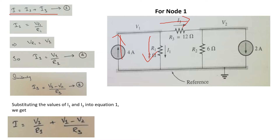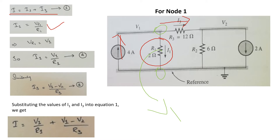Now, what is the value of I1 and I3? From the figure, you will see that the value of I1 is equal to the voltage across R1 divided by the value of R1. So I1 is equal to Vr1 divided by R1. But if we place the probe of the multimeter here and here, you will see that this voltage is basically equal to V1. So we can write that Vr1 is equal to V1, and the value of I1 becomes I1 is equal to V1 divided by R1. We write that as equation number A.